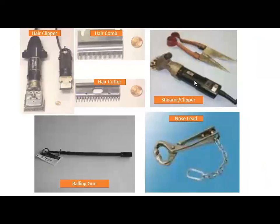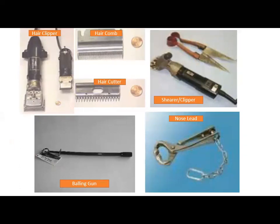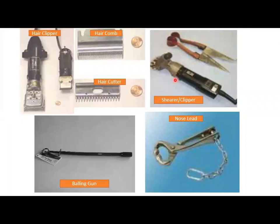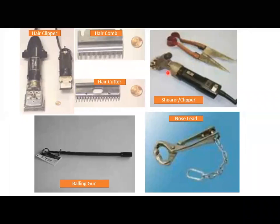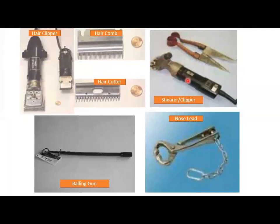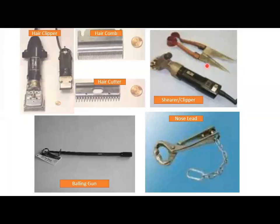This tool is especially employed in sheep to remove the hair — the wool — of the sheep. This one is electrical and this one is manual. This is a shearer or clipper, basically a wool clipper, so it removes the wool from the body of the sheep.